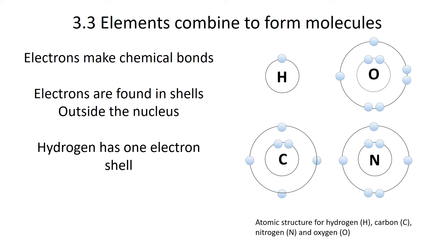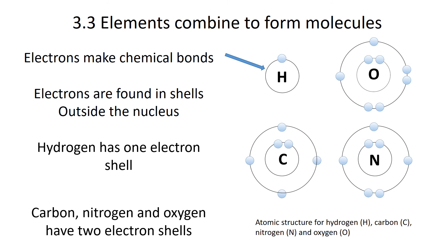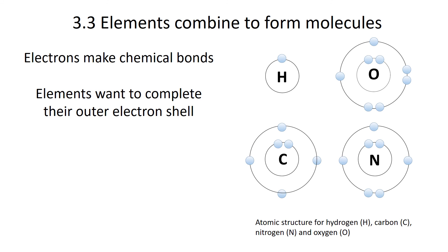Hydrogen has one electron shell — that's the one with the H at the top left. You can see the electron shell right there; this is where you're going to find the electron. Carbon, nitrogen, and oxygen each have two electron shells, an outer and an inner. Now elements combine to complete their outer electron shell, so they like to have eight electrons in what's called their valence shell, and the valence shell of any element will always be the outermost ring of electrons or the outermost shell.